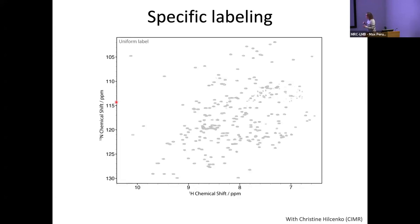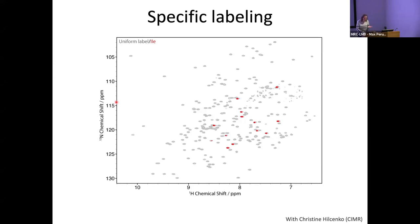In terms of specific labeling, you don't have to uniformly label your system. Here's a project we're working on with Christine Hilchenko from the CIMR — this is a uniformly labeled system. But if you supplement your growth media with specifically 15N-labeled amino acids, you can specifically label amino acid types, such as all the leucines, isoleucines, tyrosines, and valines. If you're having trouble with your assignment, specifically labeling amino acid types will really help.